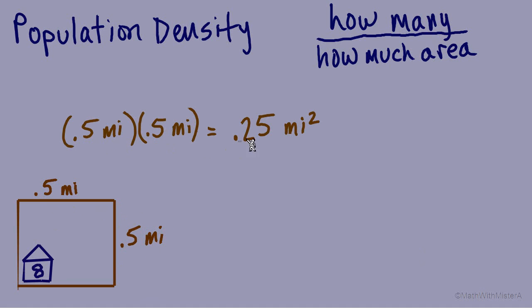0.5 times 0.5 equals 0.25 or half times half equals a quarter. These two dimensions were miles, so we've calculated area in square miles. 0.25 square miles.